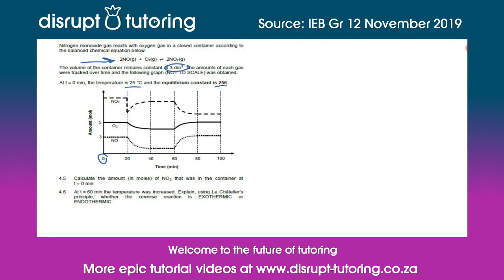What we are given is the equilibrium constant for the reaction, and we know we can relate that to the concentration of the reactants and the products. From the concentration we can find the number of moles of the product because we're also given the volume of the container, so we can use the equation n = c × v. So let's first write the expression for the equilibrium constant for this reaction. The expression for Kc is equal to the concentration of the product over the concentration of the reactants.